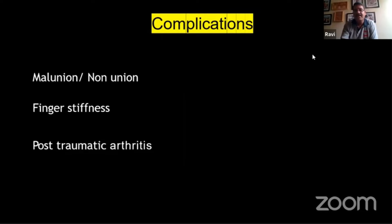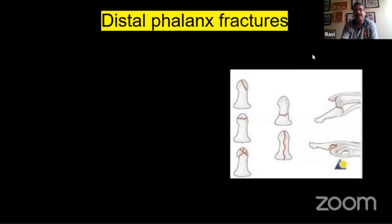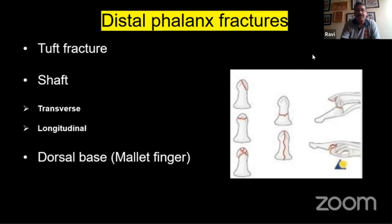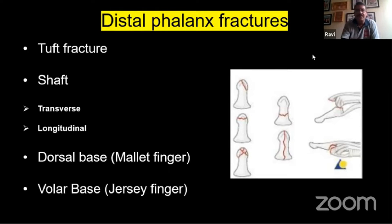Common complications of badly managed fractures include malunion, nonunion, stiffness, and post-traumatic arthritis. Starting with the distal phalanx, fractures can be tuft or shaft fractures — either transverse or longitudinal — and dorsal-based fractures, eponymously known as bony mallet finger injuries. We also encounter volar-based bony avulsions of the FDP — jersey fingers.